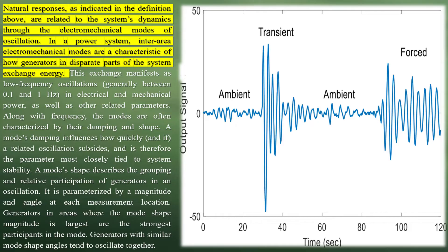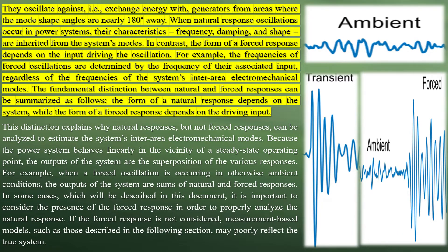Natural oscillation response: natural oscillations are the system's natural response to transient events and small signal random disturbances. They are determined by the frequency and damping ratio of system modes and are a function of overall system dynamics. The natural response of an LC circuit is described by a homogeneous second-order differential equation, and the solution for the current is a function of the natural frequency of the LC circuit and the starting voltage on the capacitor.